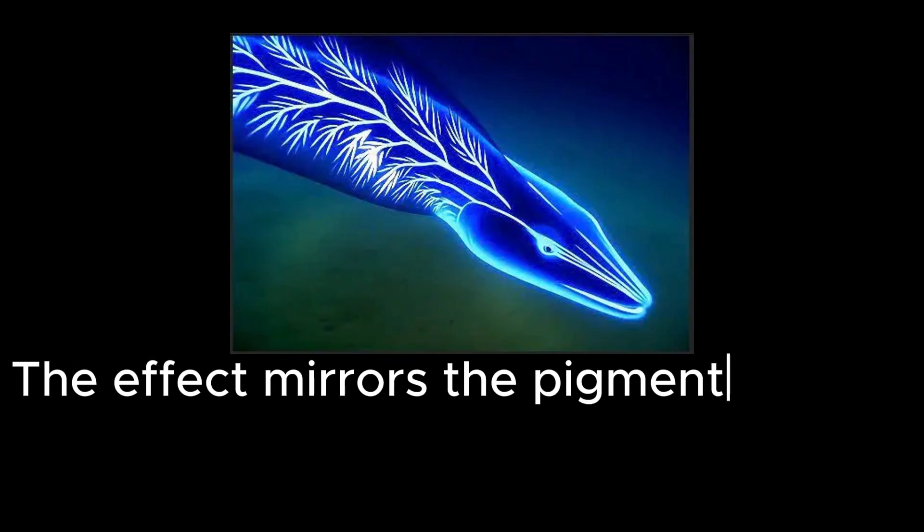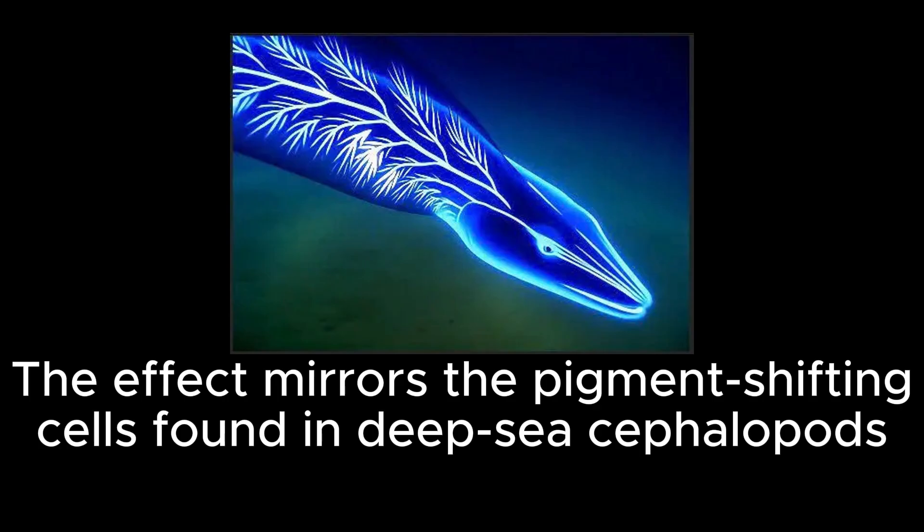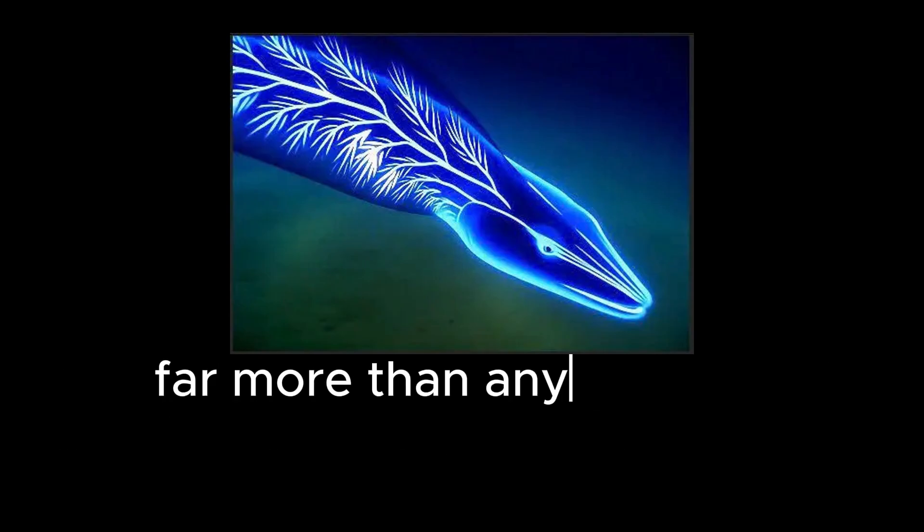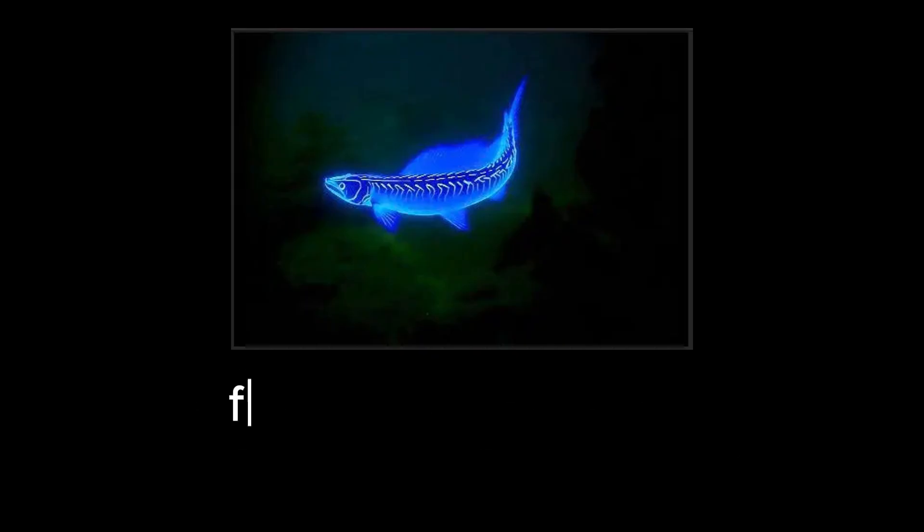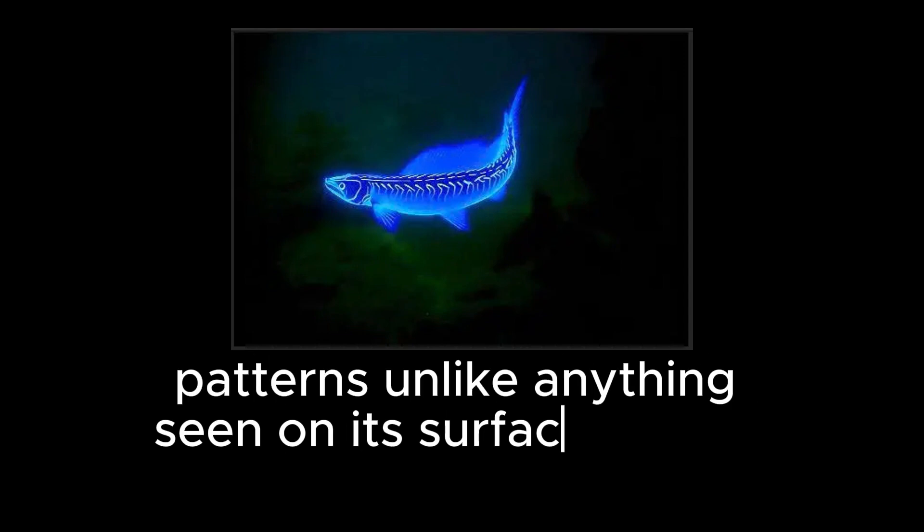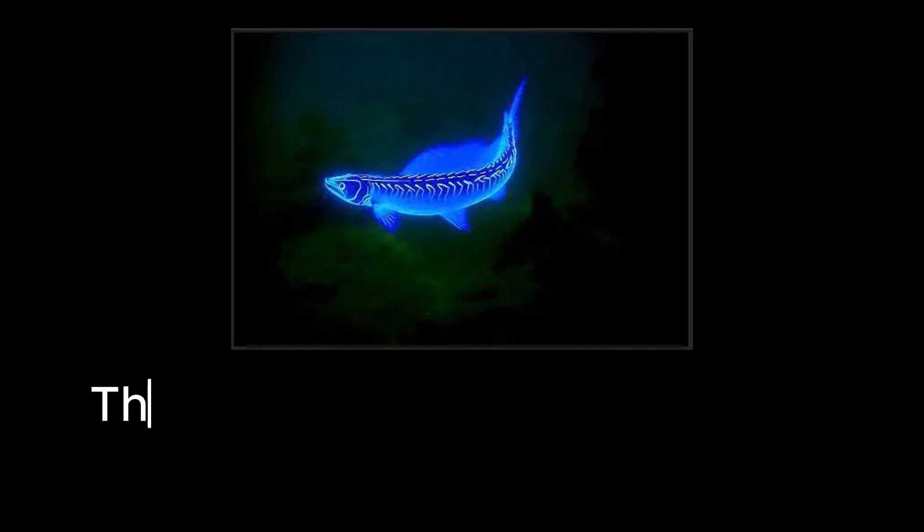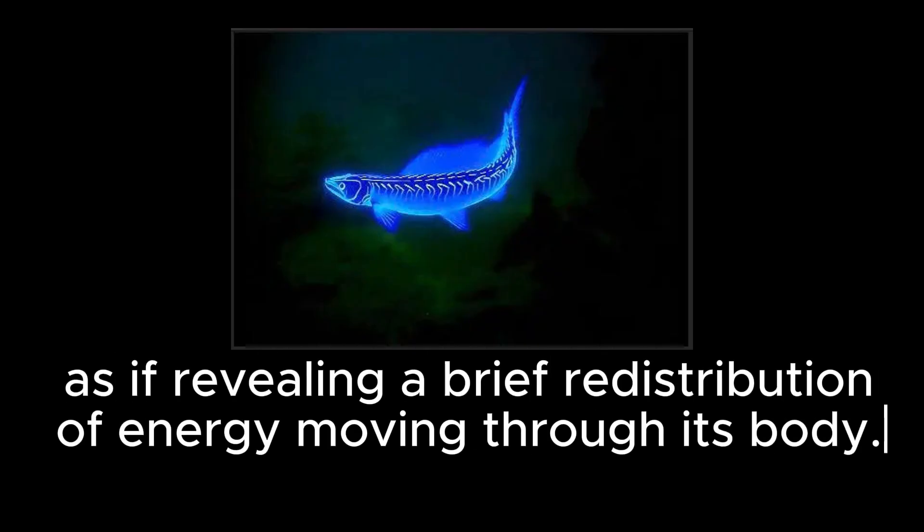The effect mirrors the pigment-shifting cells found in deep-sea cephalopods, far more than anything we associate with vertebrate life. Before the creature dissolved back into the darkness, faint branching lines flickered along its sides, patterns unlike anything seen on its surface before. They glowed for only a moment, shifting as the creature reshaped its markings, as if revealing a brief redistribution of energy moving through its body.